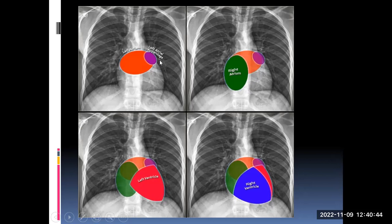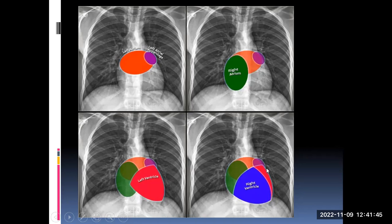The right atrium forms the entire right heart border. As a rule, one-third of the heart should be on the right side of the midline and two-thirds on the left. If the right atrium enlarges, you will see the right heart border move towards the right. The left heart border is mainly made up of the left ventricle. If the left ventricle enlarges, it causes the apex to shift downwards and laterally — giving something like a big papaya shape in left heart failure. The right ventricle makes the inferior border; when it enlarges, it pushes the apex upwards, giving something like a baby's boot or mango shape.